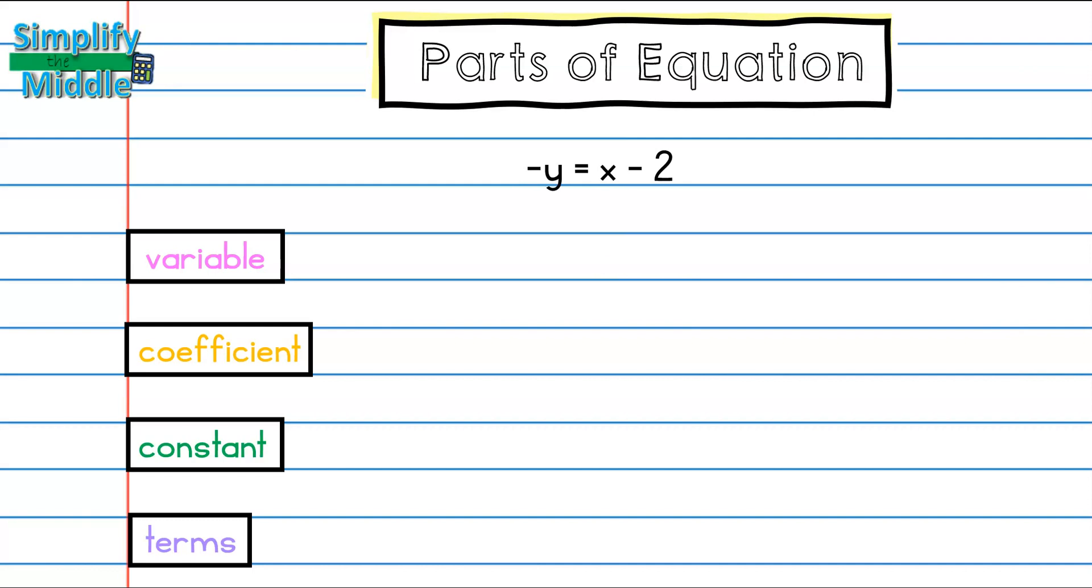For our last example, we have negative y equals x minus 2. Here I have two variables, x and y, followed by my coefficients. And remember, when we're looking at our coefficients here, if we do not see a number, then the answer is 1 for the coefficient. And because I have a negative here, it's going to be negative 1.